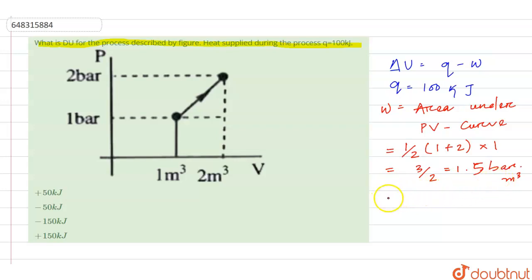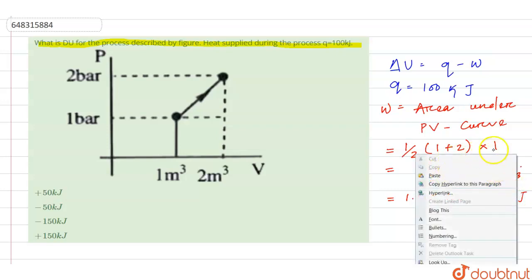Now converting this to joules, 1.5 times 100 equals 150 kilojoules.